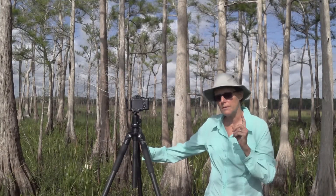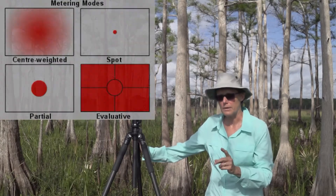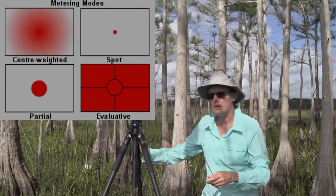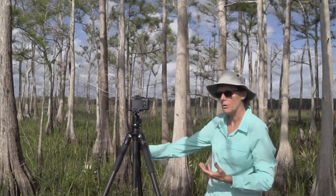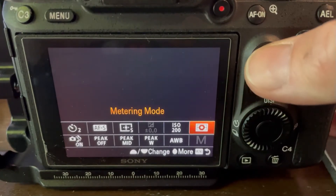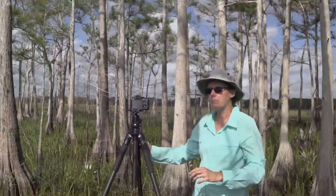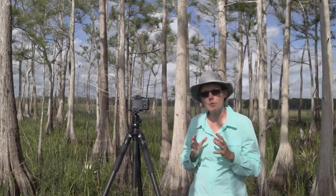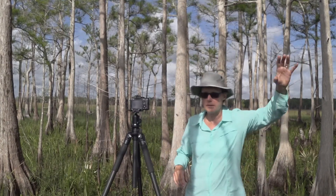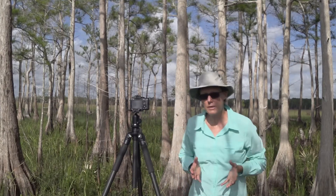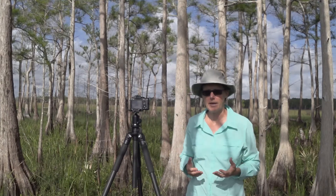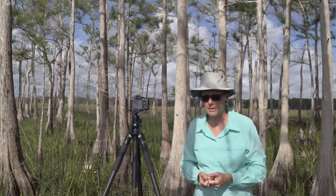Number one: I use evaluative metering — that's also called multi-segment or matrix metering. When you go into your meter mode menu and set it to that setting, it means the camera is going to expose for the entire scene. It's going to look at the bright areas and the dark areas and come up with some kind of analysis of that to allow you to set the exposure.